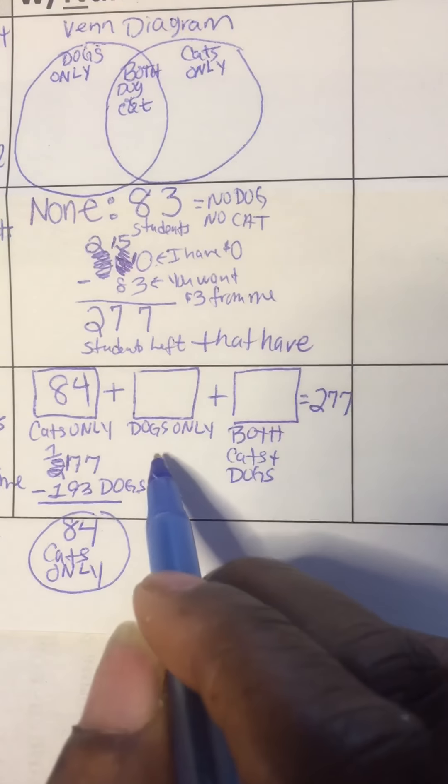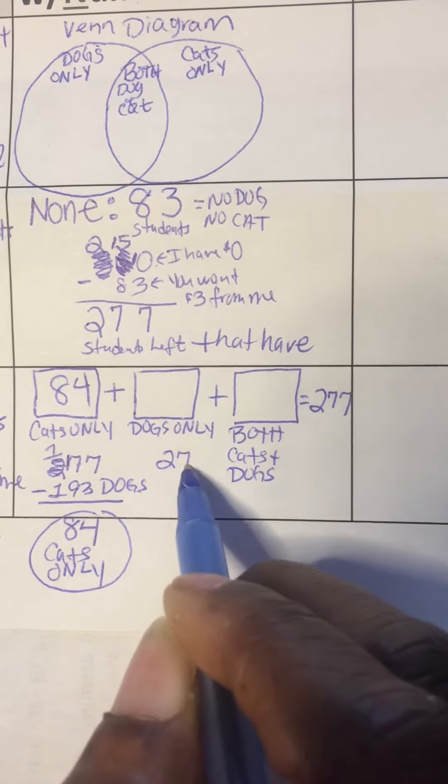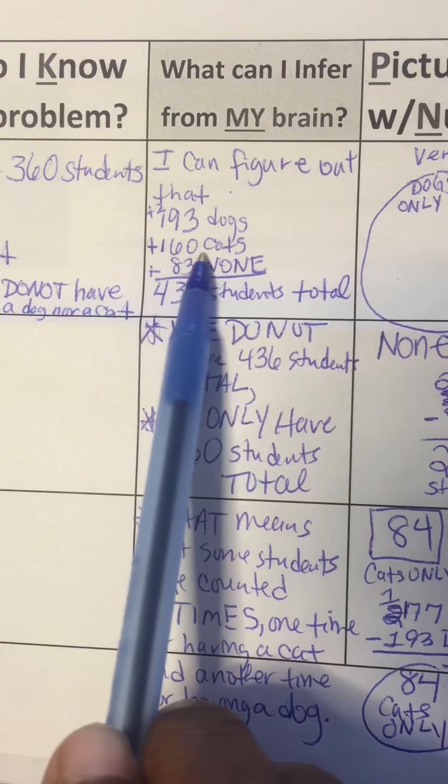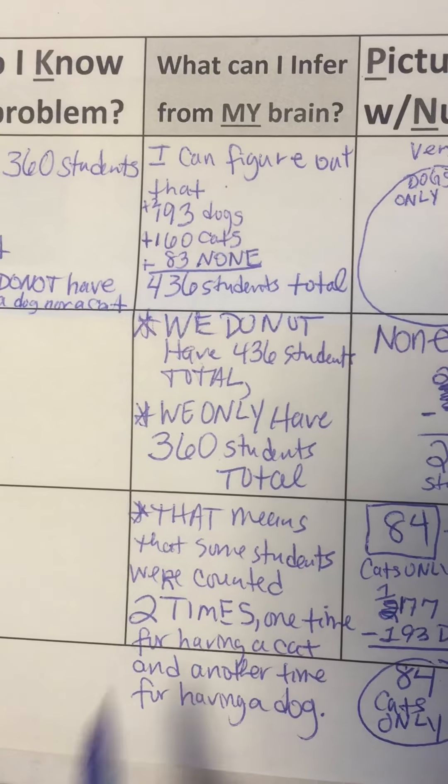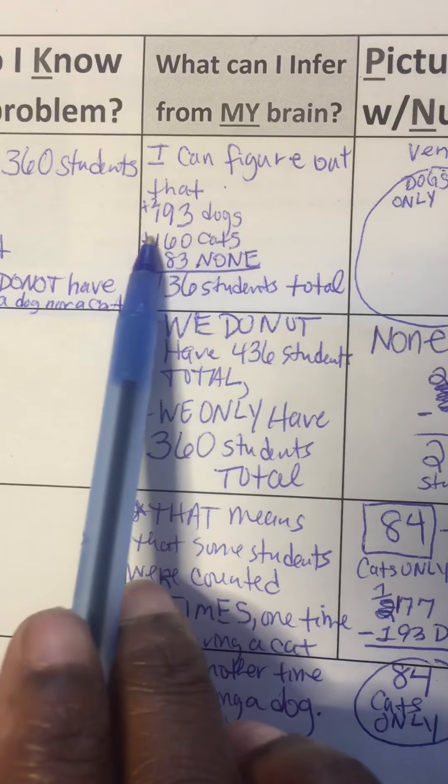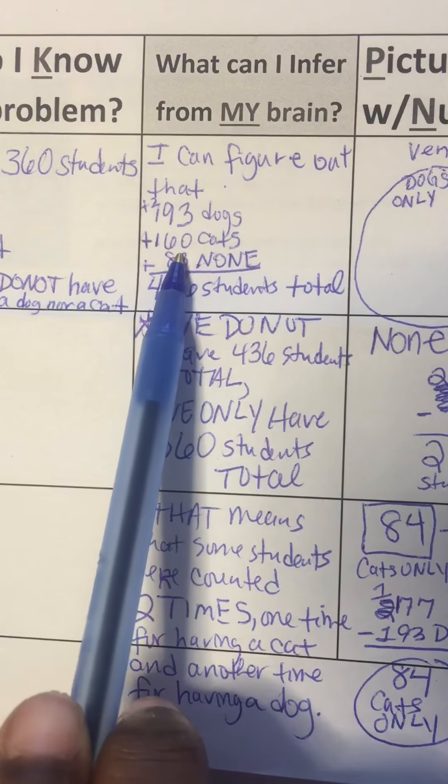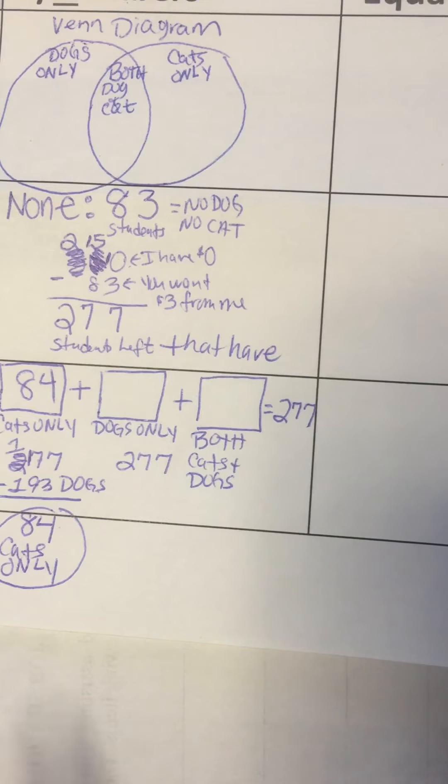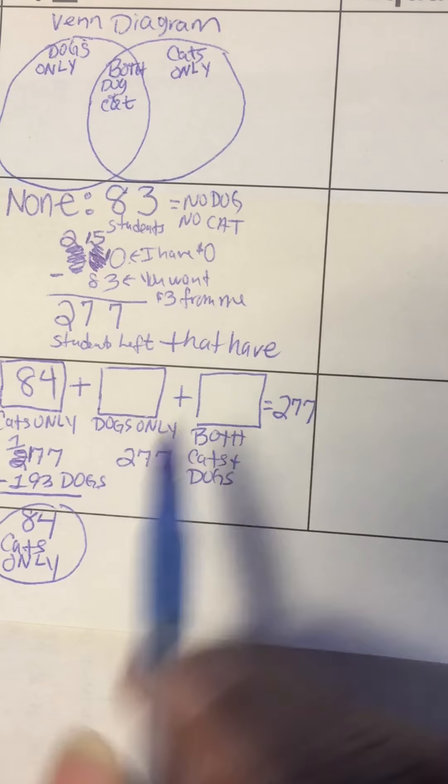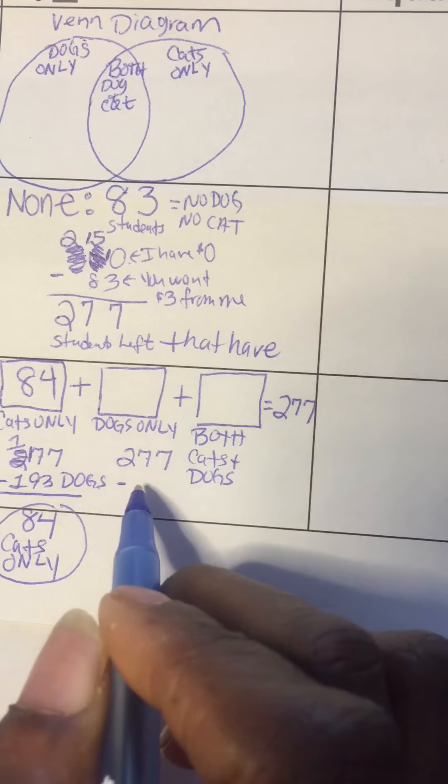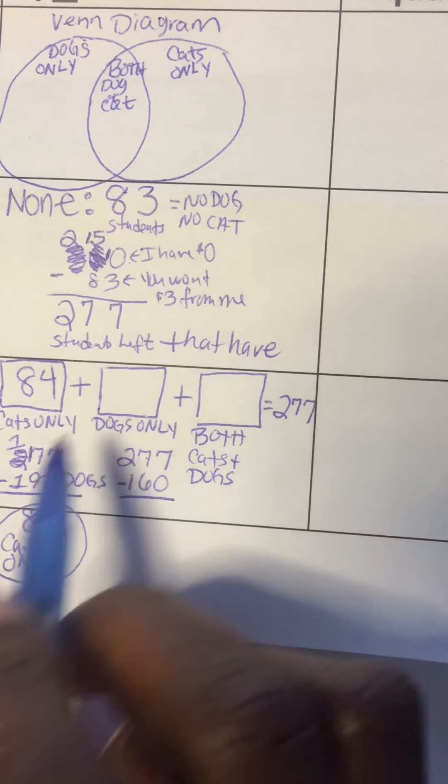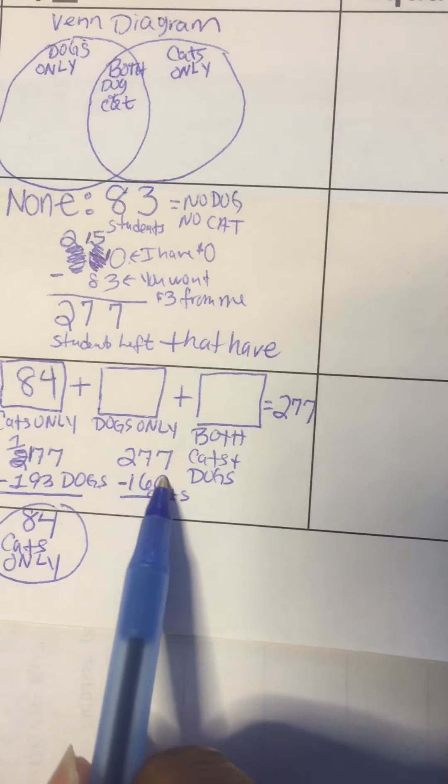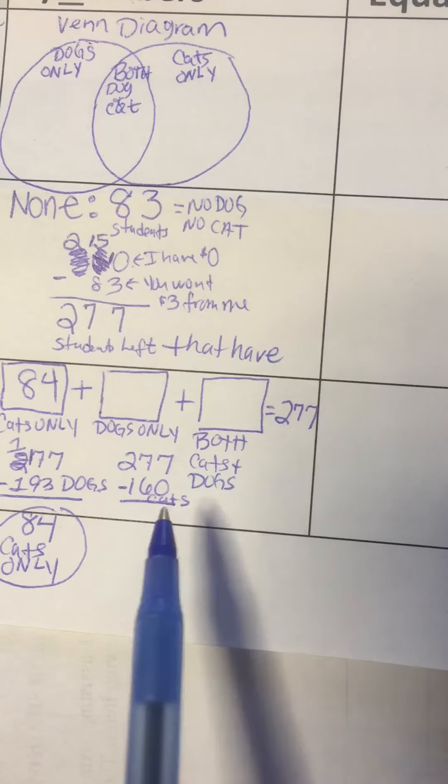To find out how many dogs only, I'm going to take the 277, and I'm going to subtract the 160 that they said had cats. Because this number not only contains the ones that had cats only, but the ones that had dogs only as well. So I'm trying to separate the two numbers. So I'm going to go here, and I'm going to take 277 minus the 160 that they said were cats. Because we know that cats and dogs are mixed into this number, students that have cats and dogs.